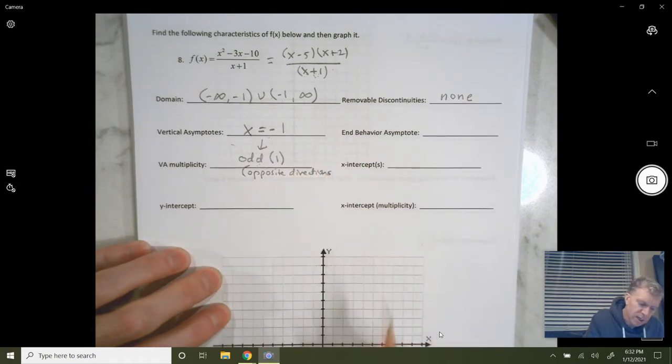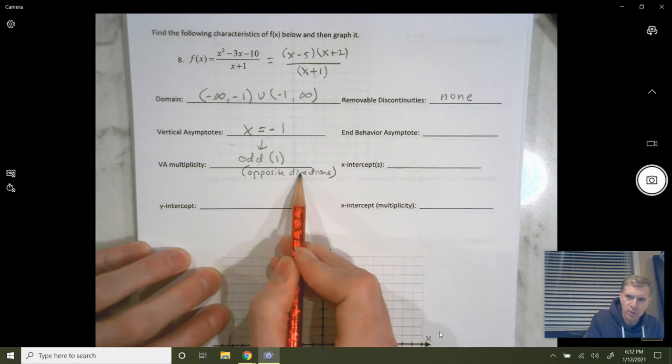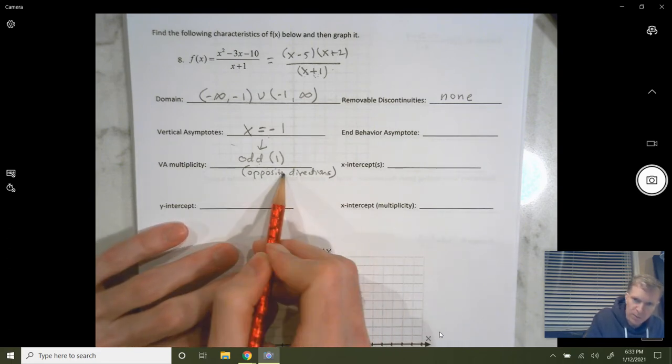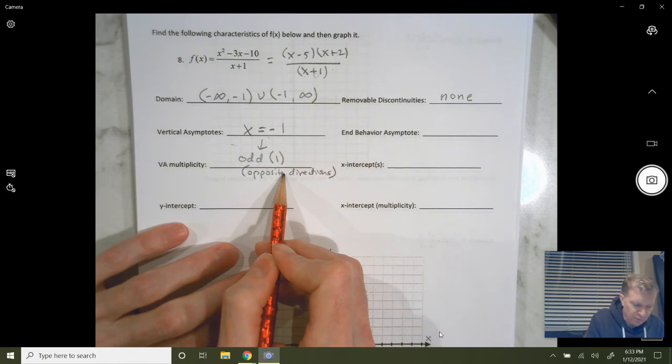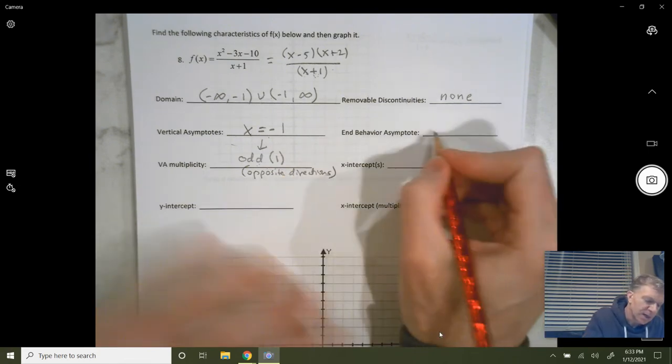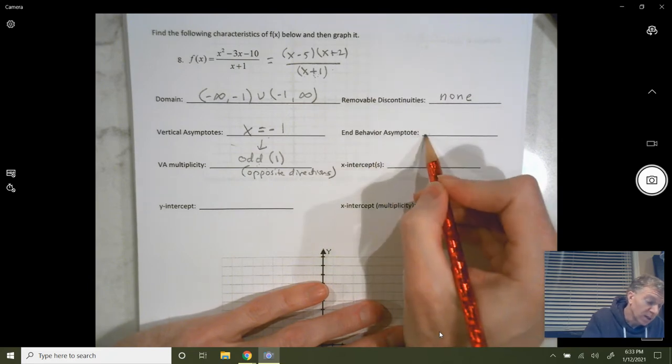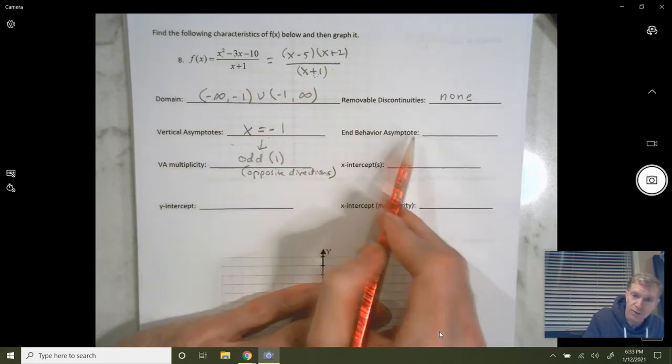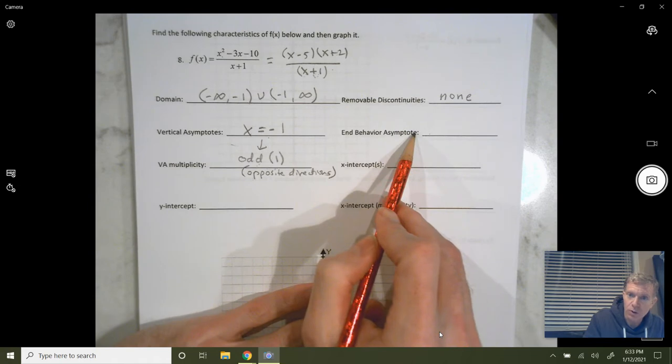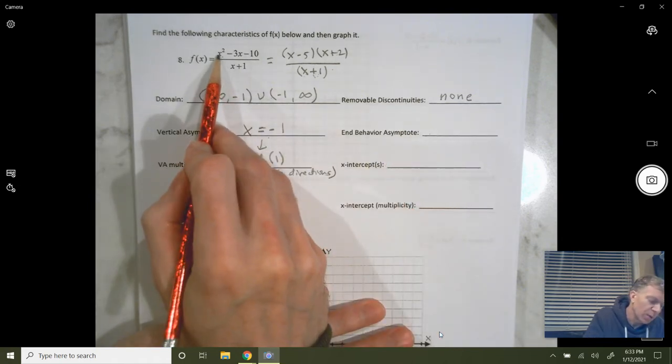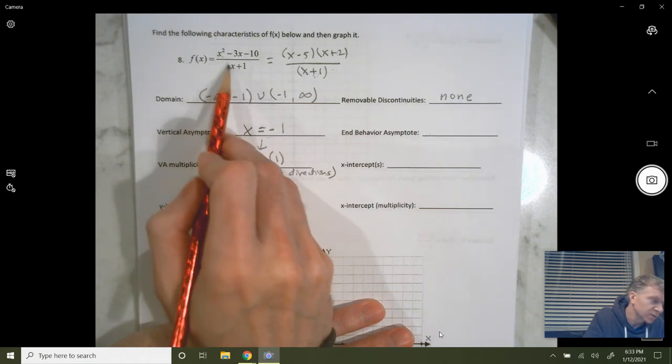So from one side, we go off to positive infinity, one side we go off to negative infinity. For instance, coming from the left, we might go to positive infinity. Coming from the right, we might go to negative infinity. End behavior asymptotes. Well, those are either horizontal asymptotes or oblique asymptotes. So, this is top heavy by one degree, second degree and first degree.